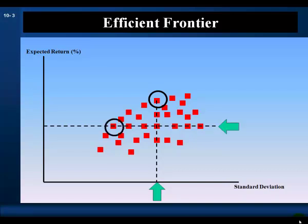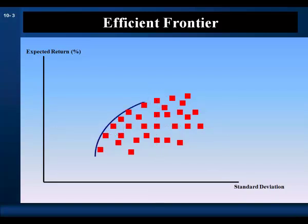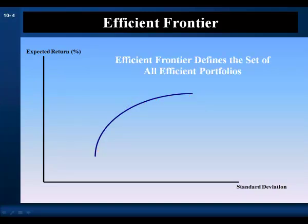At this expected return, this is the best portfolio — the efficient portfolio at this expected return. The best portfolios, the efficient portfolios, are found on the upper edge of the Investment Opportunity Set, moving towards higher expected return and lower risk. This set of efficient portfolios is called the efficient frontier. The efficient frontier defines the set of all efficient portfolios.